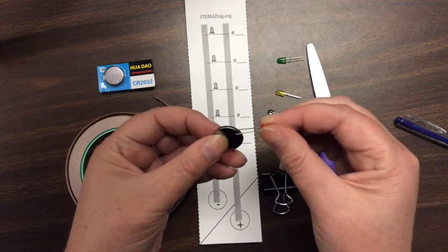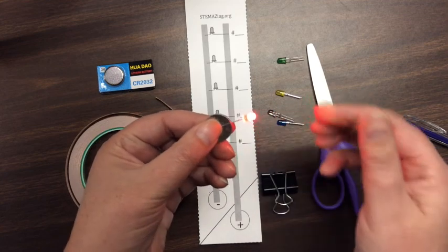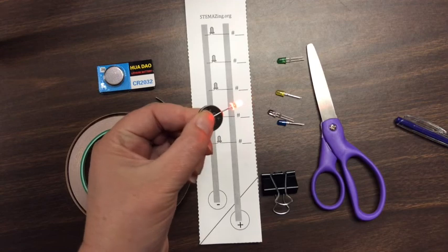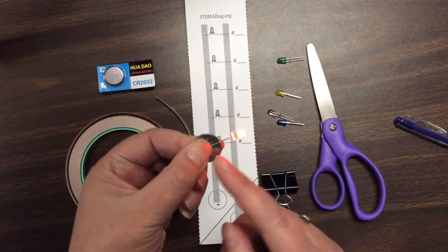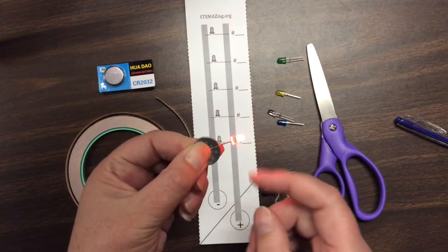The short negative lead has to go to the back of the battery, the negative side, and the longer lead has to go to the positive side of the battery that has the writing on it, or it won't light.